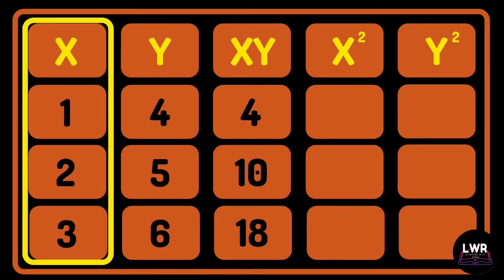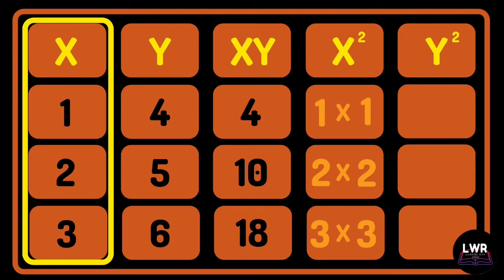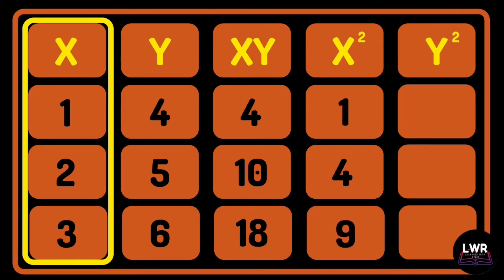The x squared column, or the fourth column, contains the x variables that are squared. It is also similar to multiplying each variable by itself: 1 squared, or 1 times 1, is equal to 1; 2 squared, or 2 times 2, is equal to 4; and 3 squared, or 3 times 3, is equal to 9.